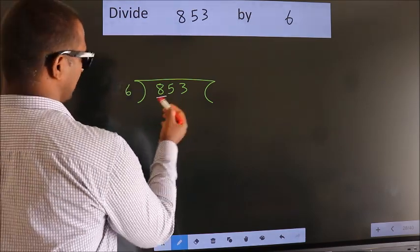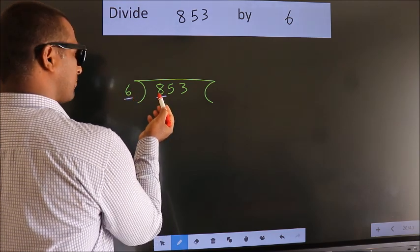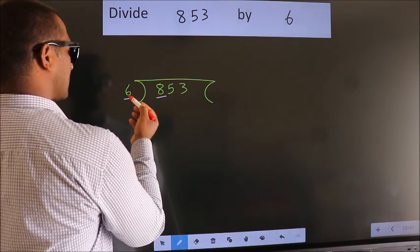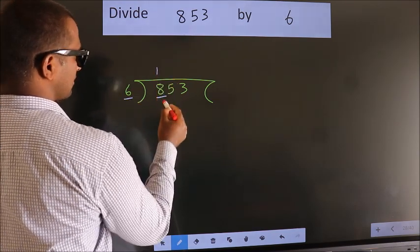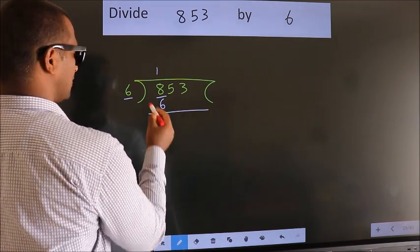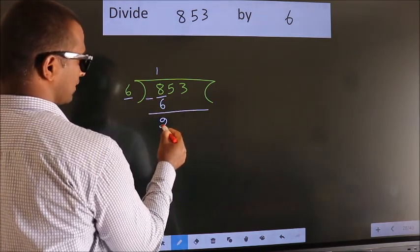Here we have 8, here 6. A number close to 8 in 6 table is 6 once 6. Now we should subtract.